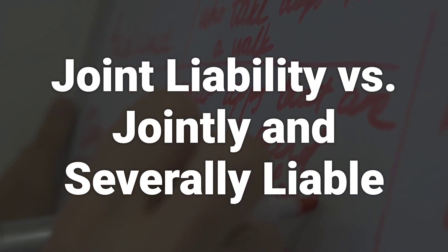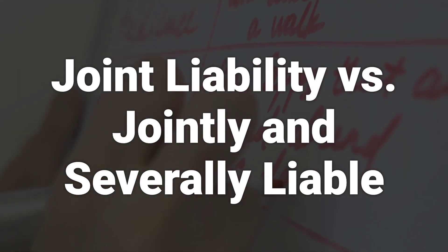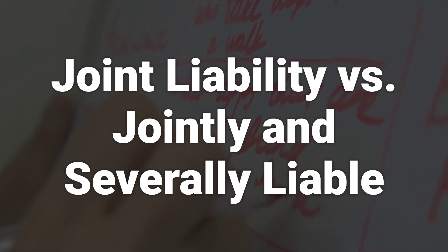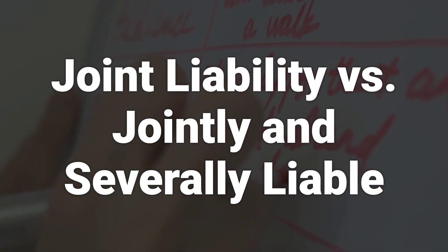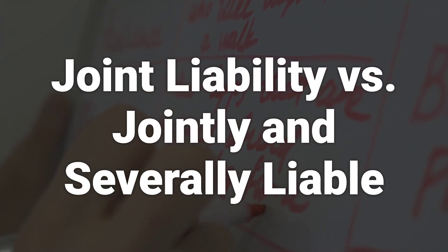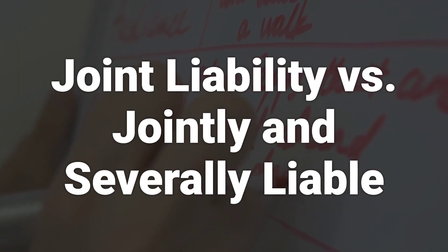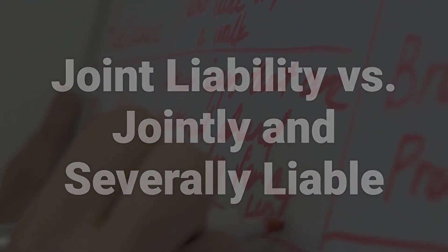When partners have joint and several liability for a debt, a creditor can sue any of the partners for repayment. If one partner pays the debt, then that partner may pursue other partners to collect their share of the debt obligation. This means that it is the responsibility of all partners to sort out and reconcile their separate shares of liability and payments.